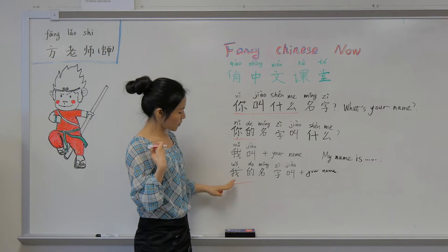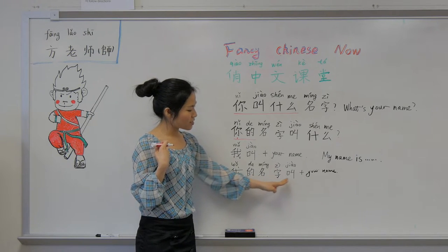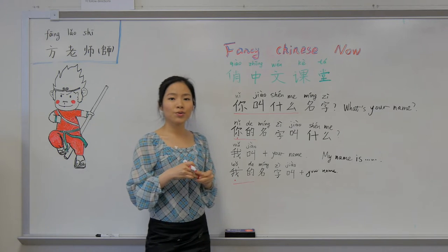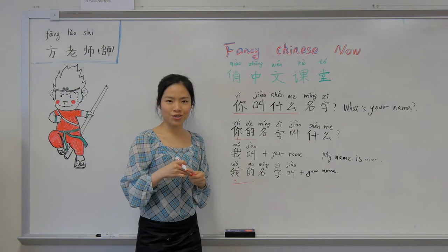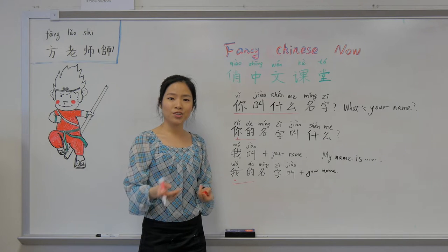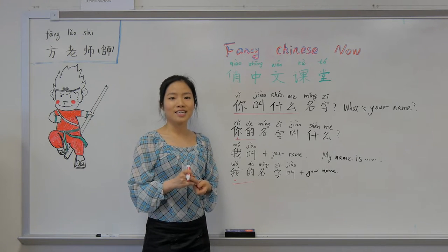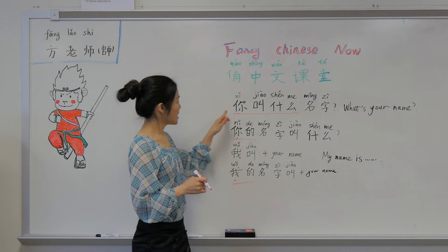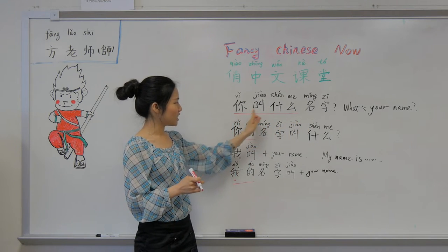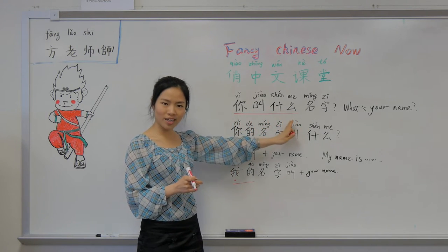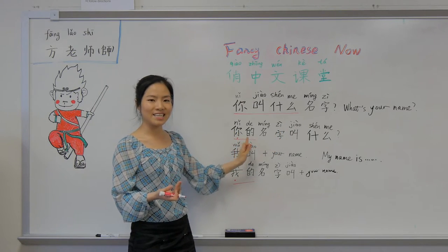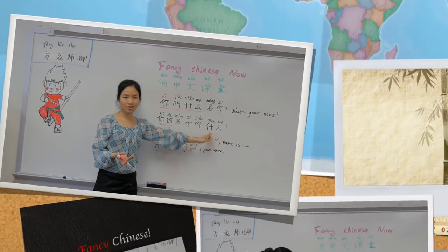我的 means 'my', so you can answer: 我的名字叫 Mike, meaning 'My name is Mike'. To summarize, the ways to say 'what's your name?' in Mandarin are: 你叫什么名字, or 你叫什么, or 你的名字叫什么.